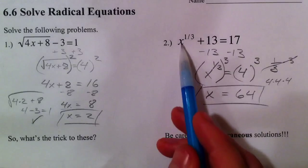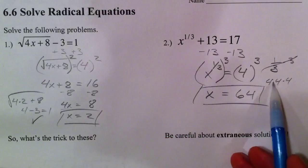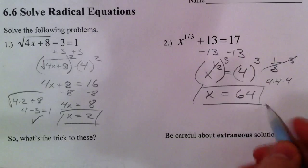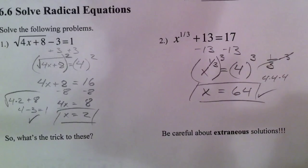There we have it. The cubed root of 64, just talked about, was 4, and 4 plus 13 is 17, so it checks out as well. So what's the trick?